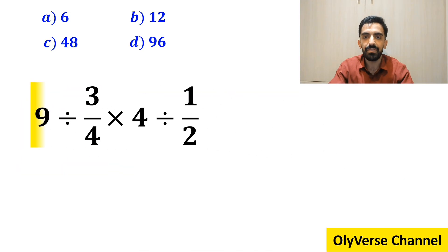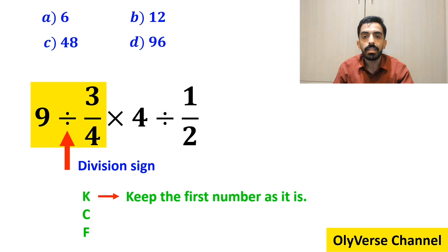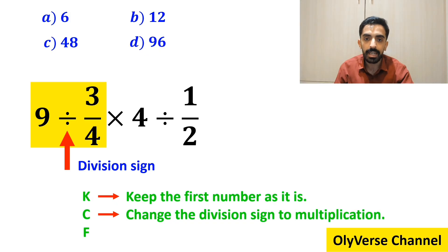It means that we begin with the expression 9 divided by 3 over 4, which I have marked in yellow. Whenever we come across a division sign between two terms, the best thing to do is to apply the KCF rule. In this rule, K stands for keep the first number as it is, C stands for change the division sign to multiplication, and F stands for flip the second fraction.